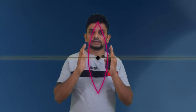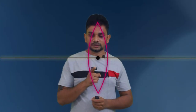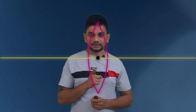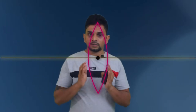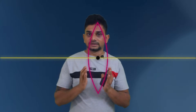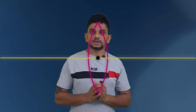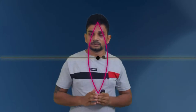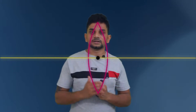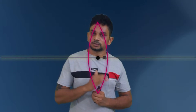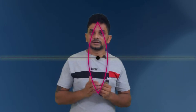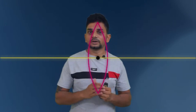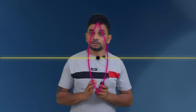First diagram is ray diagram number one — the object is at infinity. Here there is a convex lens with an optic center, and this line is the principal axis. The distance between the points should be equal: the distance between the optic center and F1, between F1 and 2F1, between F2 and the optic center, and between F2 and 2F2.